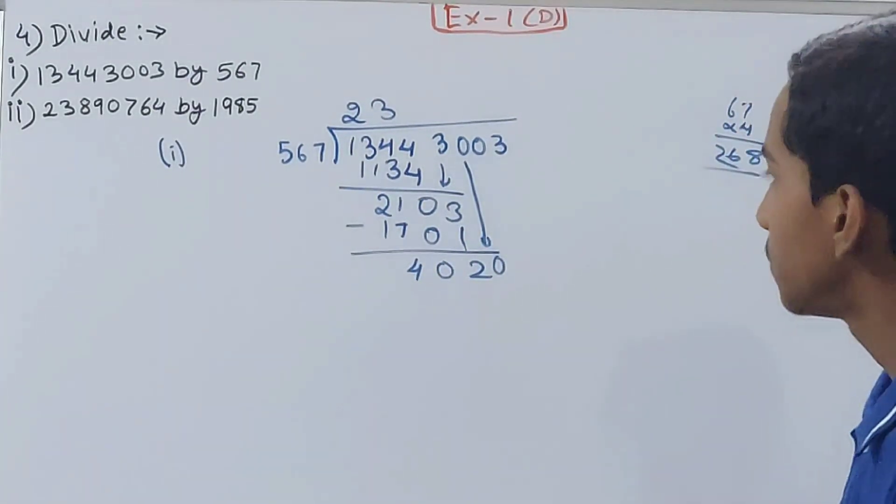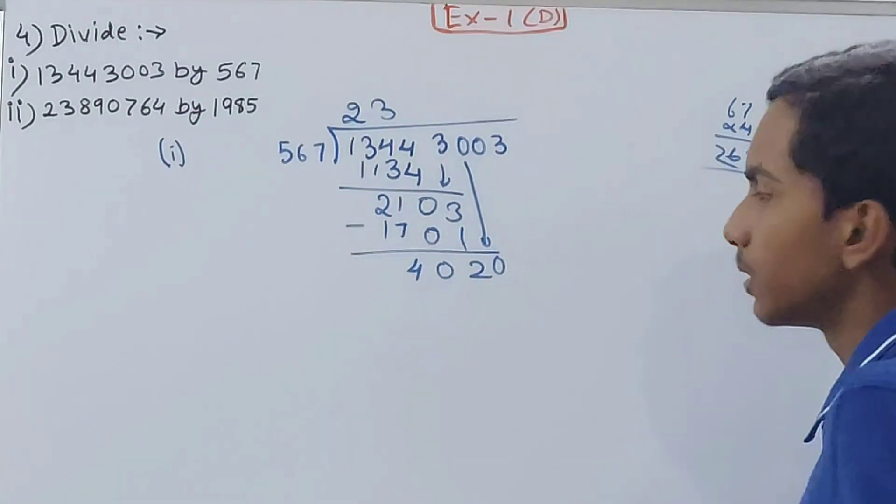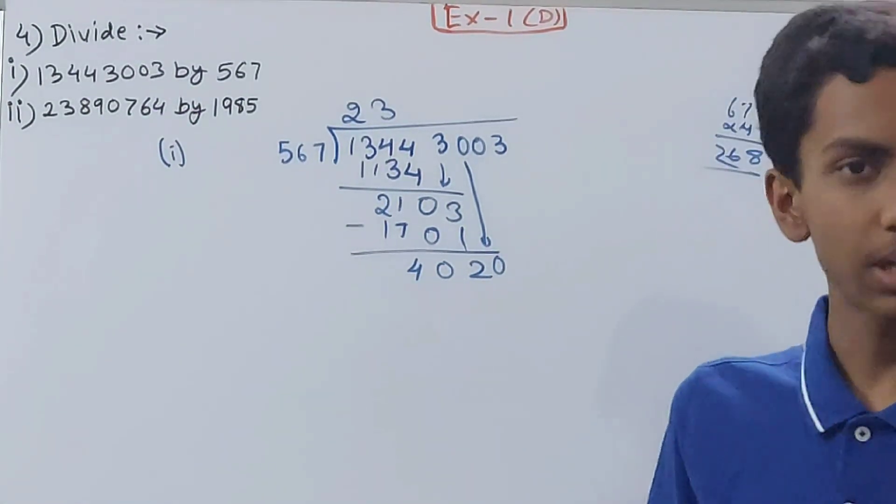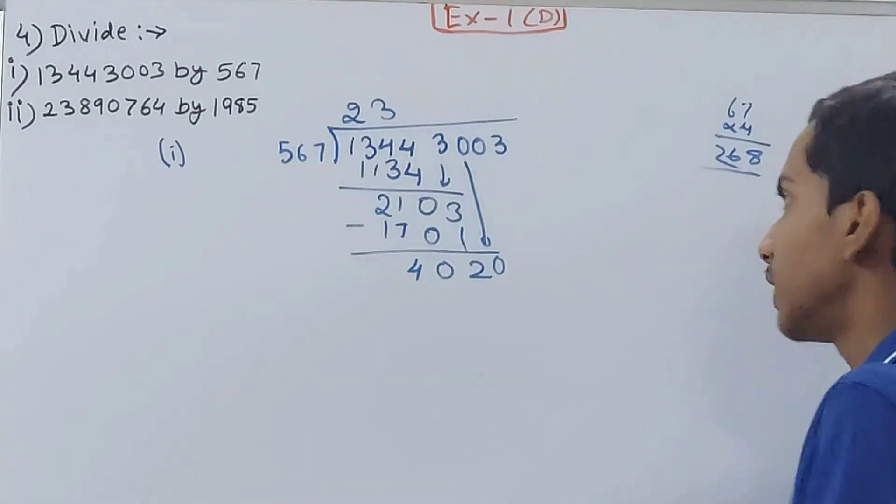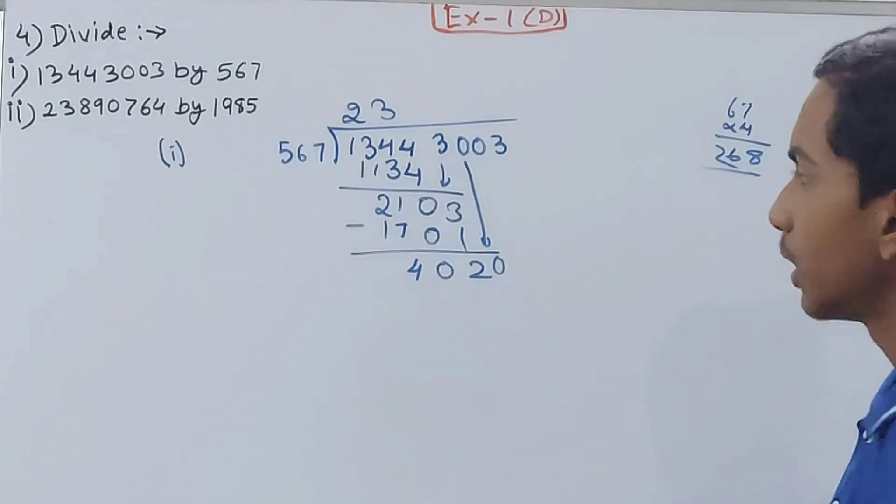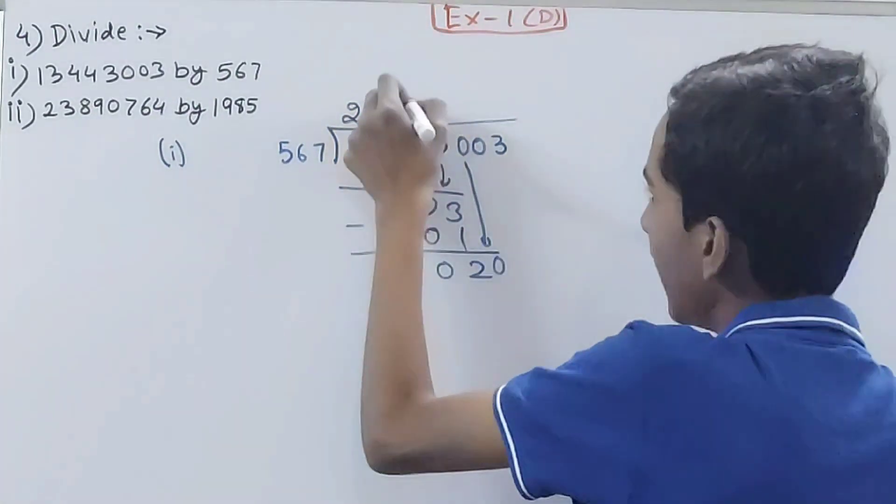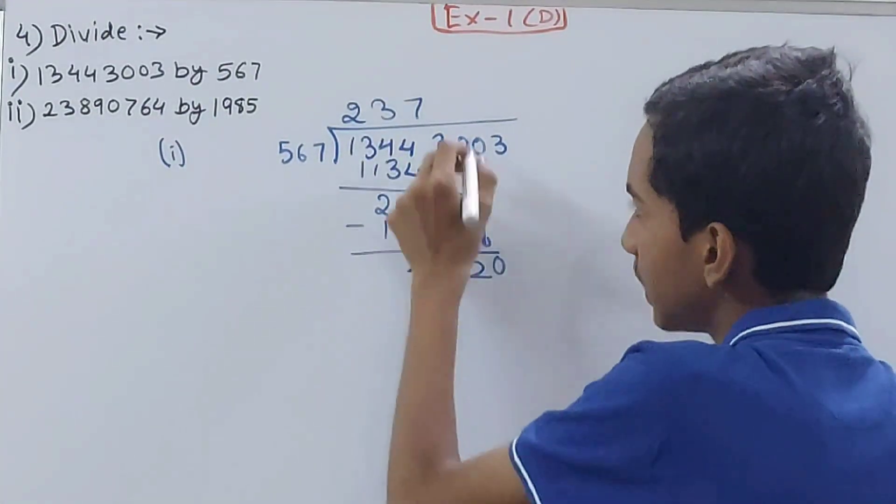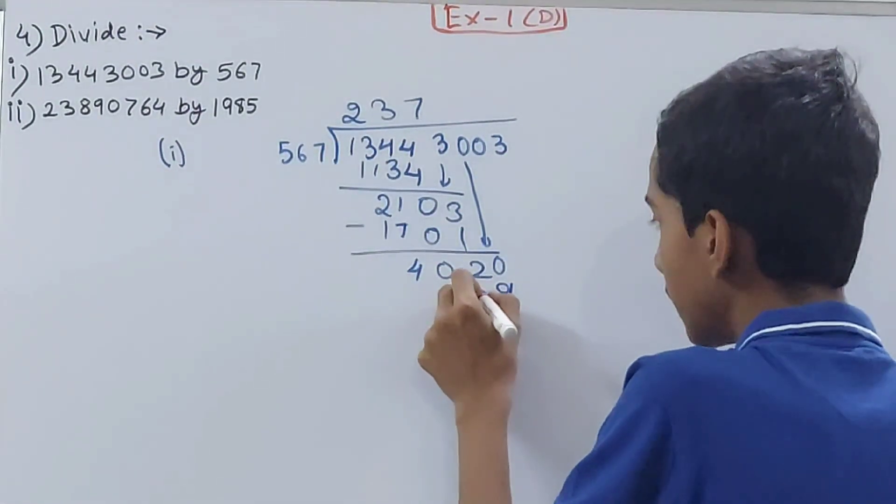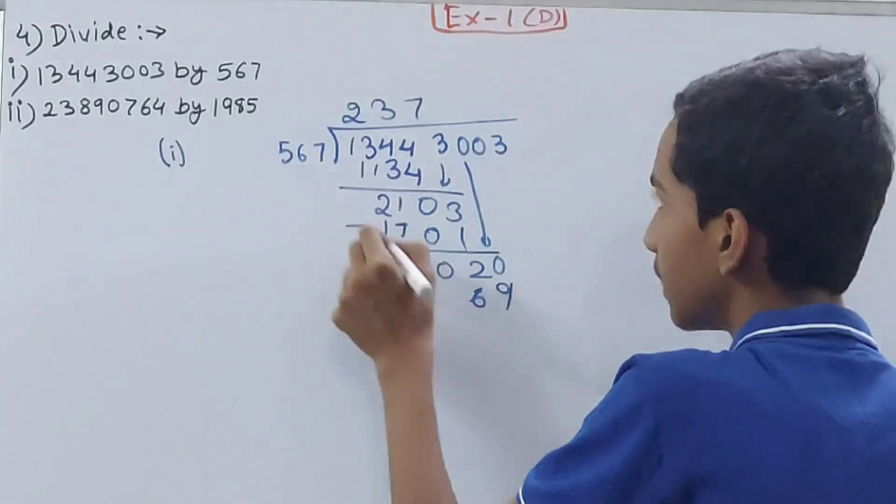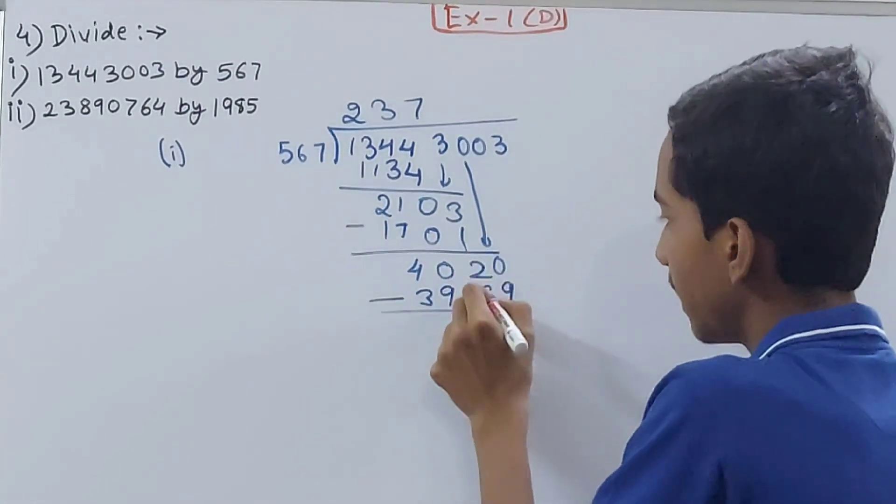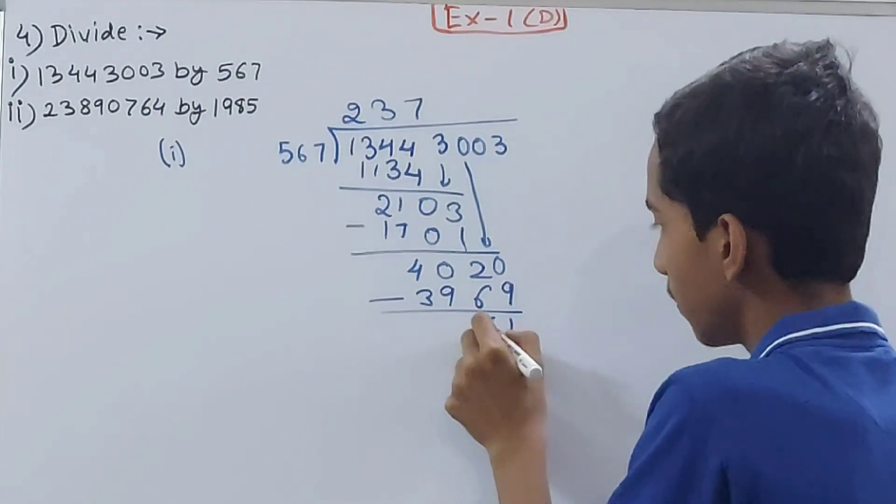Now next digit, 4020, and again you have 567. So again 5 and 40, you can take this 8 times because 40 goes 8 times directly. But again 67 times 8 will not give you less than 20, it will be more than 20. So I will go with less than 8, that is 7. 7 times 7 is 49 and 4 carried over, 7 times 6 is 42 and 4 is 46, and 4 there is 35 or 39. 10 minus 9 becomes 1, 11 minus 6 becomes 5, 9 minus 9 is 0.